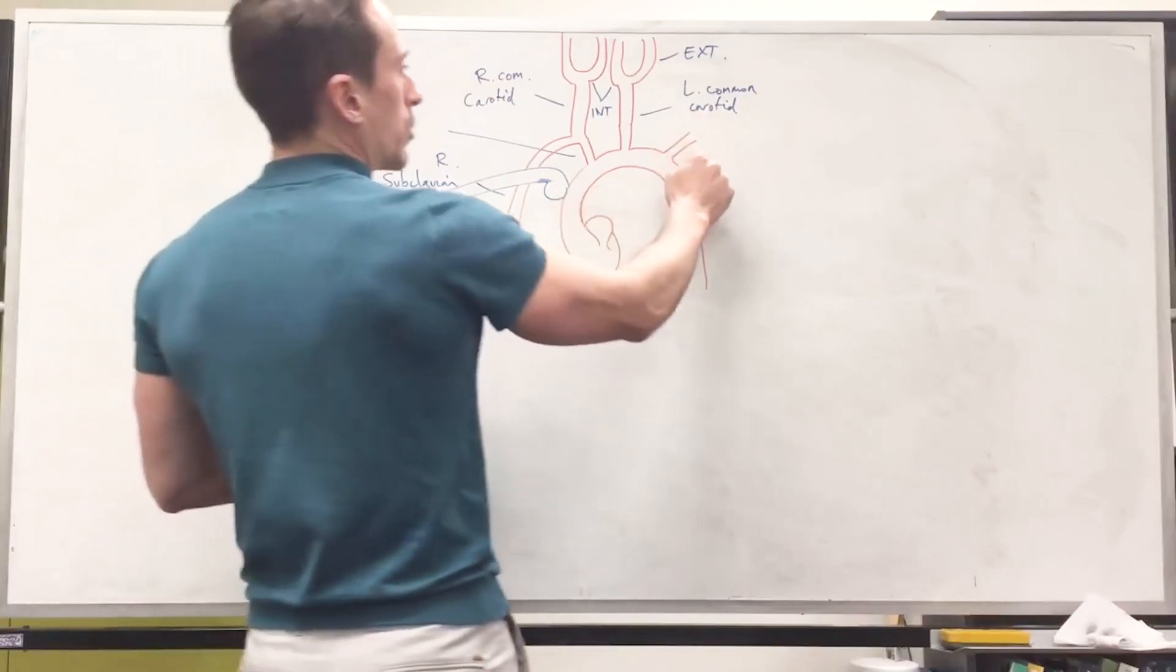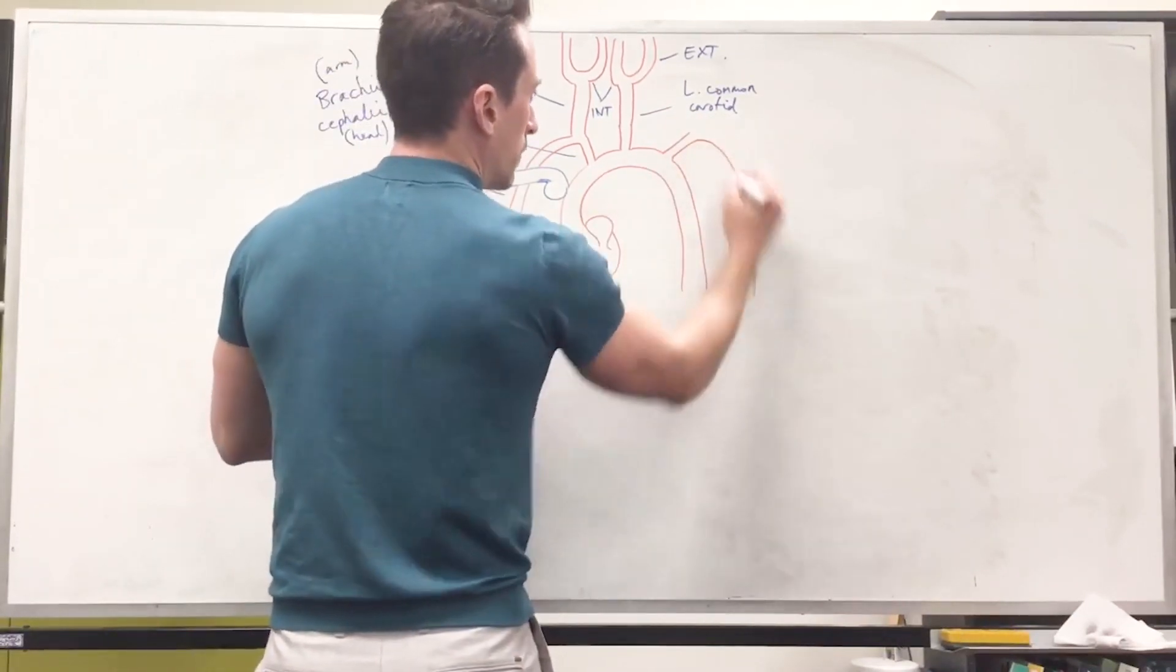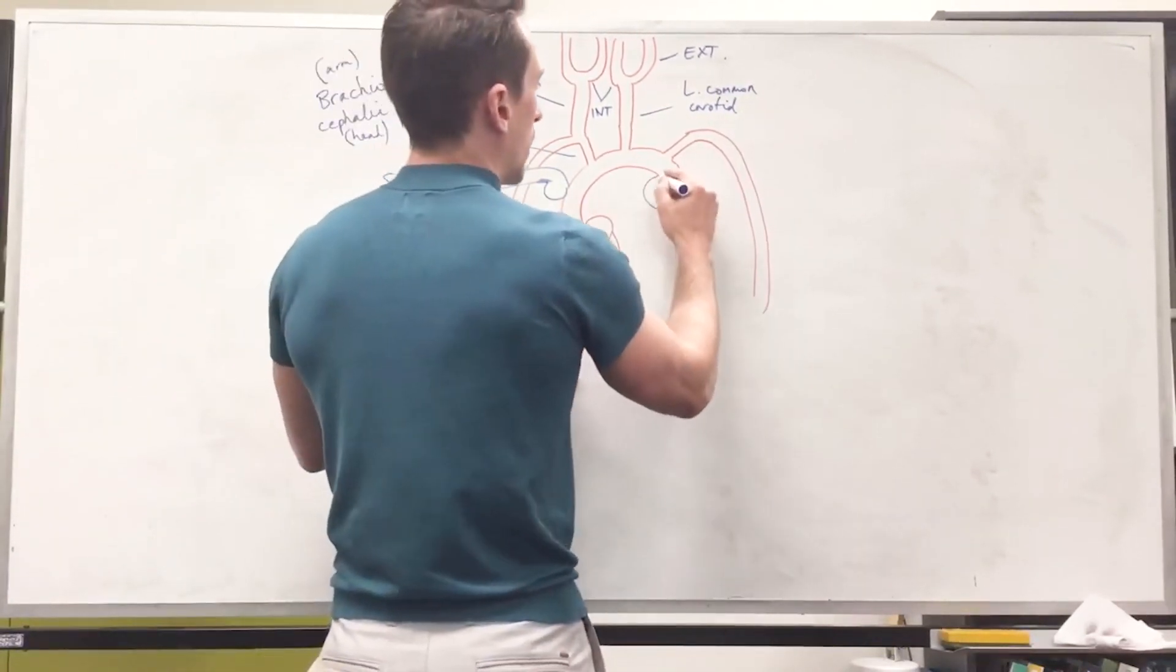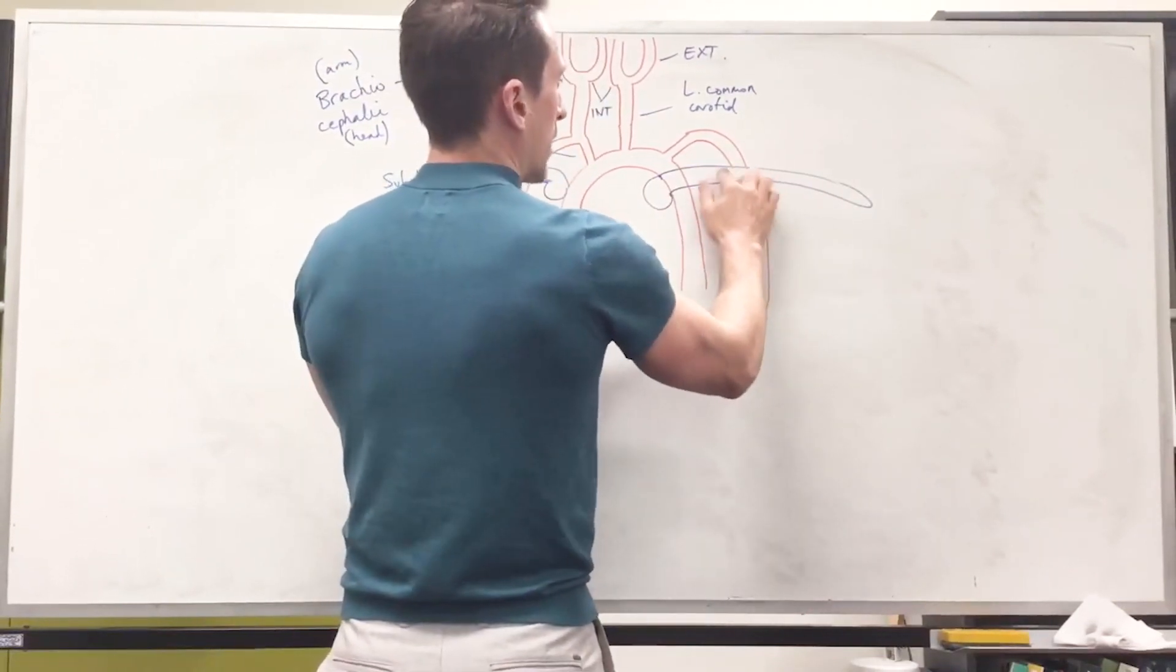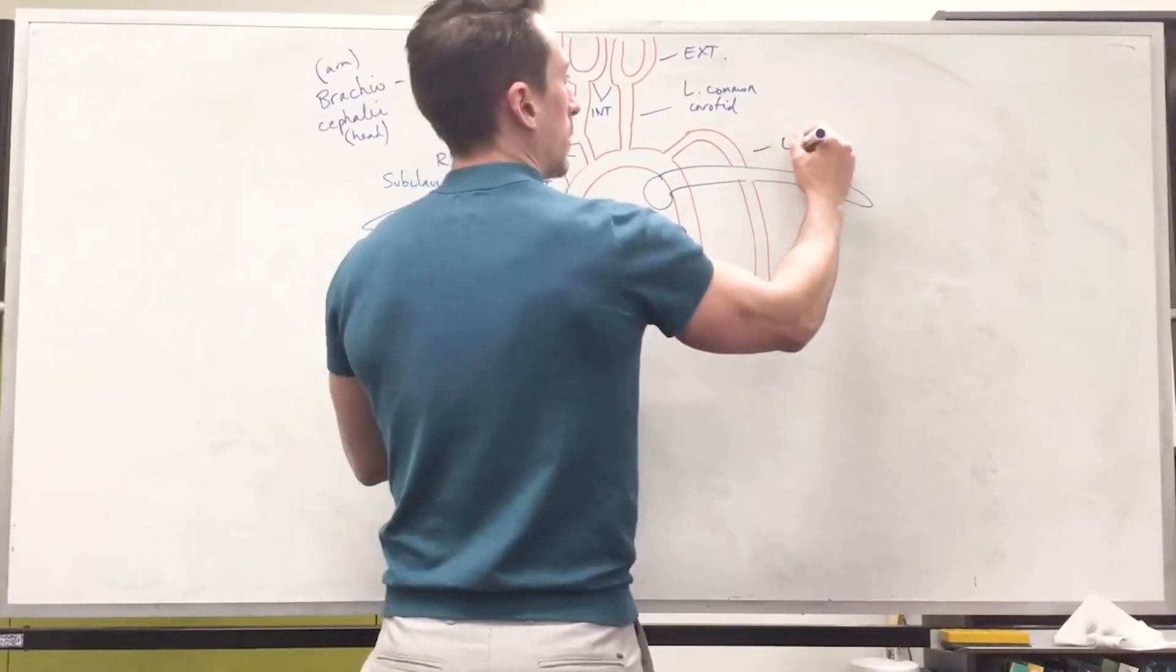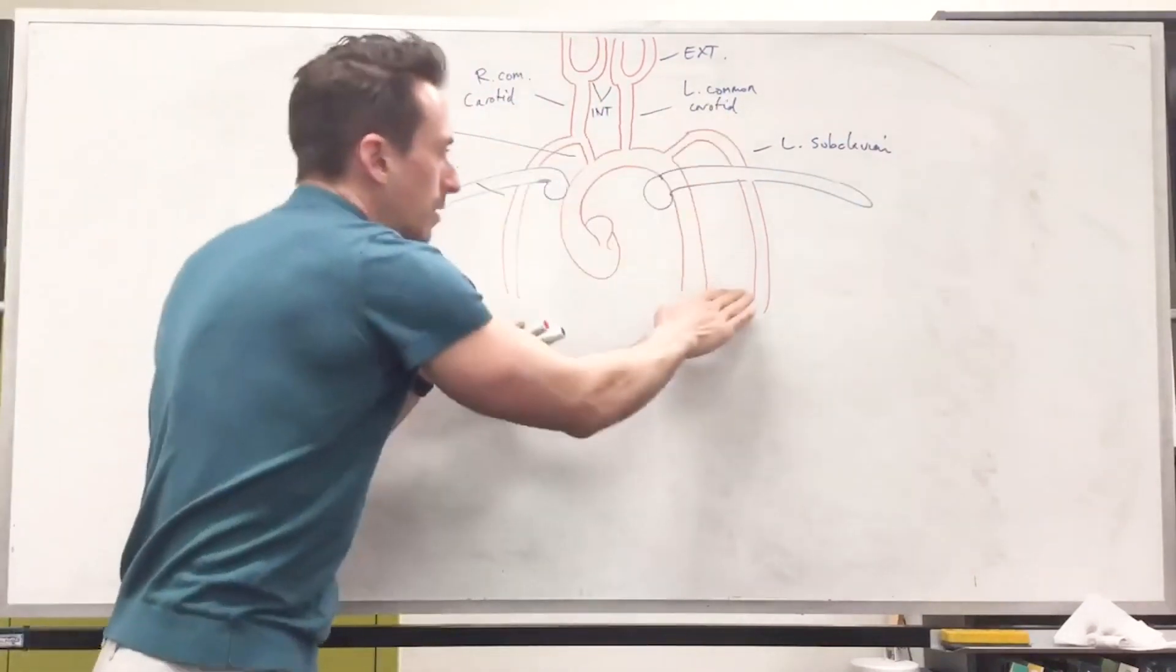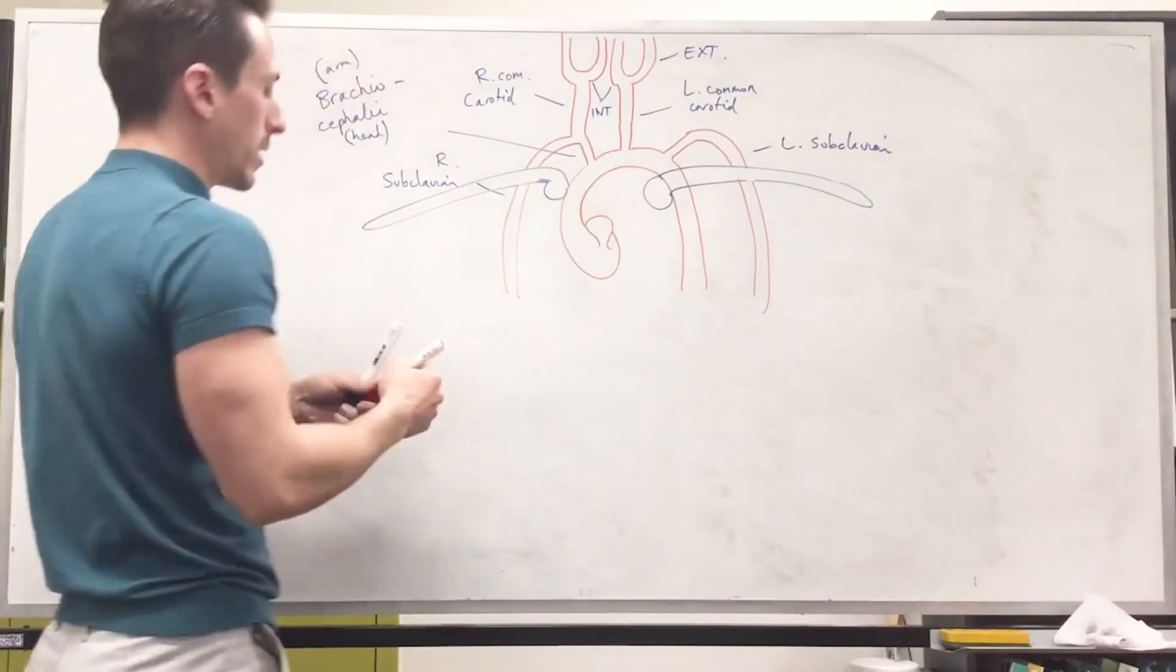Now, what we're moving on to here is what we call the left subclavian, which means its sister is the right subclavian over here. We're going to have the clavicle that it moves behind. This is the left subclavian. Now, once it's gone underneath the clavicle and it's into our arm, our upper arm, it is called the brachial.